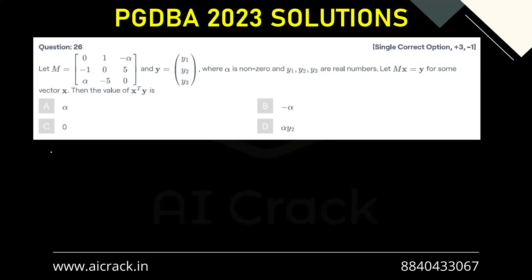Now let's solve this question. We have M equals [0, -1, alpha; 1, 0, -5; -alpha, 5, 0]. Okay, now Y equals [y1; y2; y3].